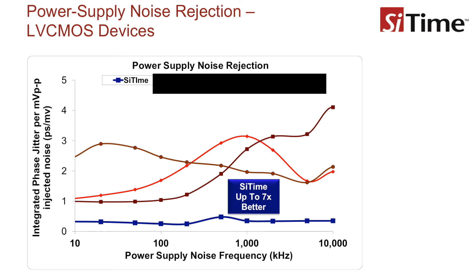Power supplies are a major source of noise in any system. Most of this noise is filtered out by passive filters and decoupling capacitors that are placed on the power supply input of the oscillator.